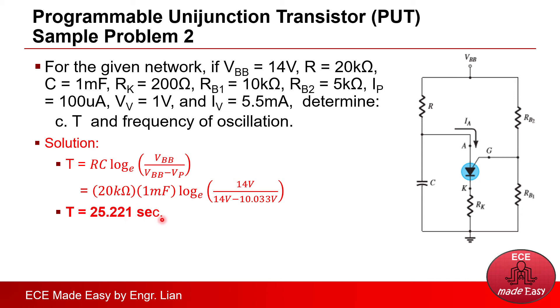And that is the final answer for the period. Once we have the period, we can easily solve for the frequency, which is just the reciprocal of period. Therefore, 1 over the given or solved value for period, we will be able to solve for the frequency, which is 0.04 Hz, a very small value. And that is the final answer.